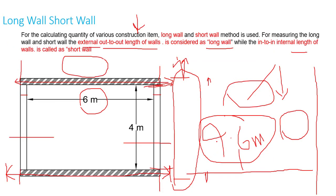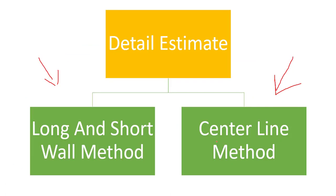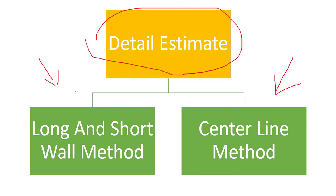So these are the two methods: one is called the long wall short wall method, and another is called the centerline method, used in detail estimate. In the next tutorial, we'll start with the long wall and short wall method and do some examples. Then we'll do examples for the centerline method. Hope you really understood the session — see you next time.